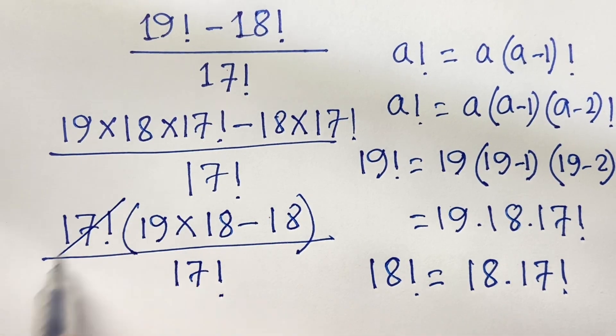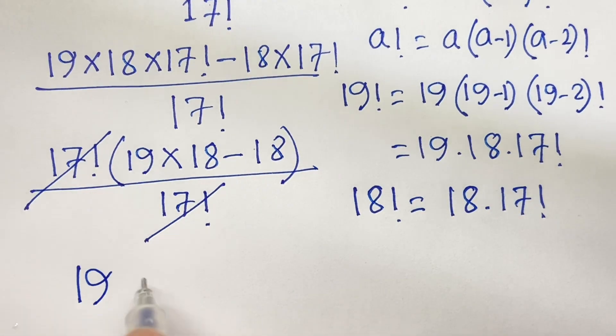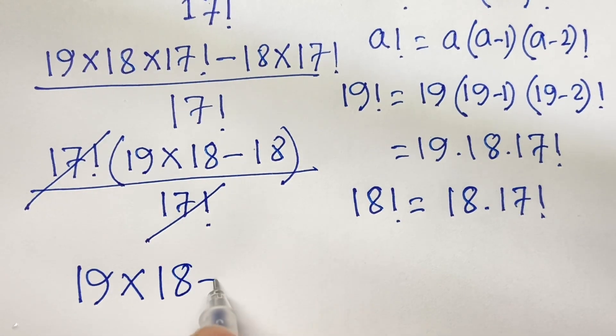Now here is 17 factorial. 17 factorial cancels. We find out here is 19 times 18 minus 18.